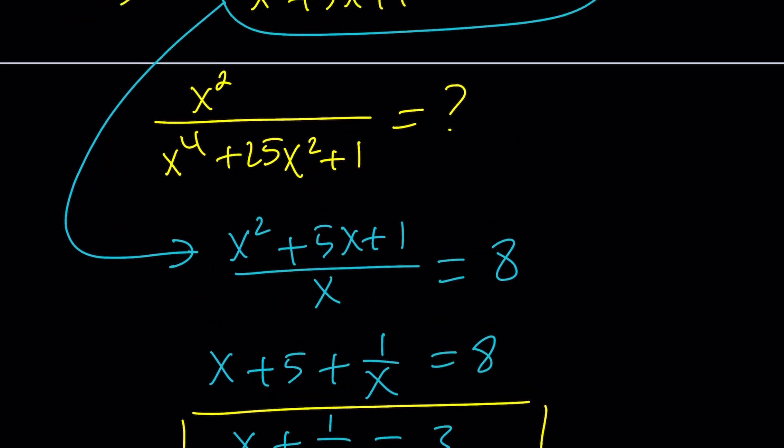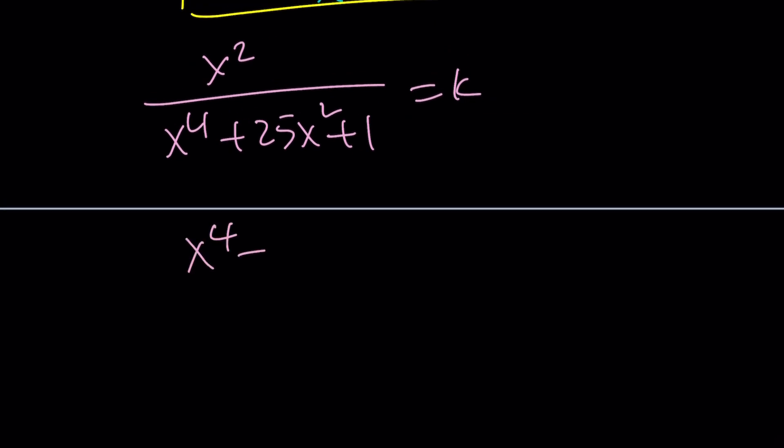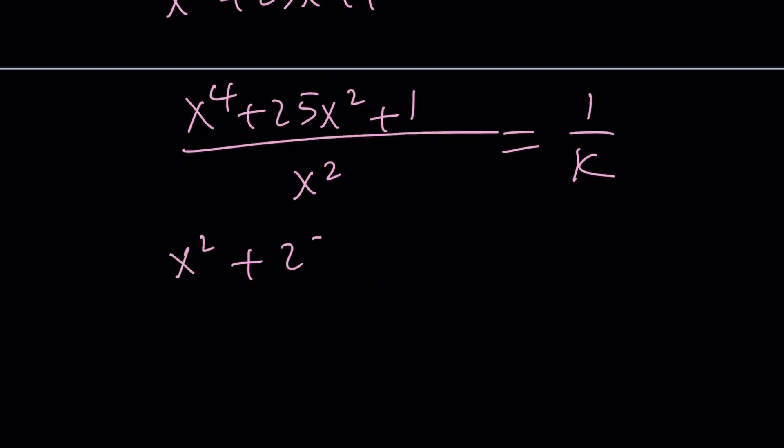So if you go ahead and do the same thing with the second expression, but how do you flip something that is not equal to anything? Question mark. Let's go ahead and set it equal to k. Since we're expecting to get a constant answer, x squared over x to the 4th plus 25x squared plus 1 is equal to k. I'm going to go ahead and flip both sides. And you could also set it equal to 1 over k, but since we're trying to find k, it's better to set it equal to k. So now this is going to be 1 over k. If you can solve for 1 over k, we can solve for k. Now let's go ahead and split it up again. x squared plus 25 plus 1 over x squared equals 1 over k.